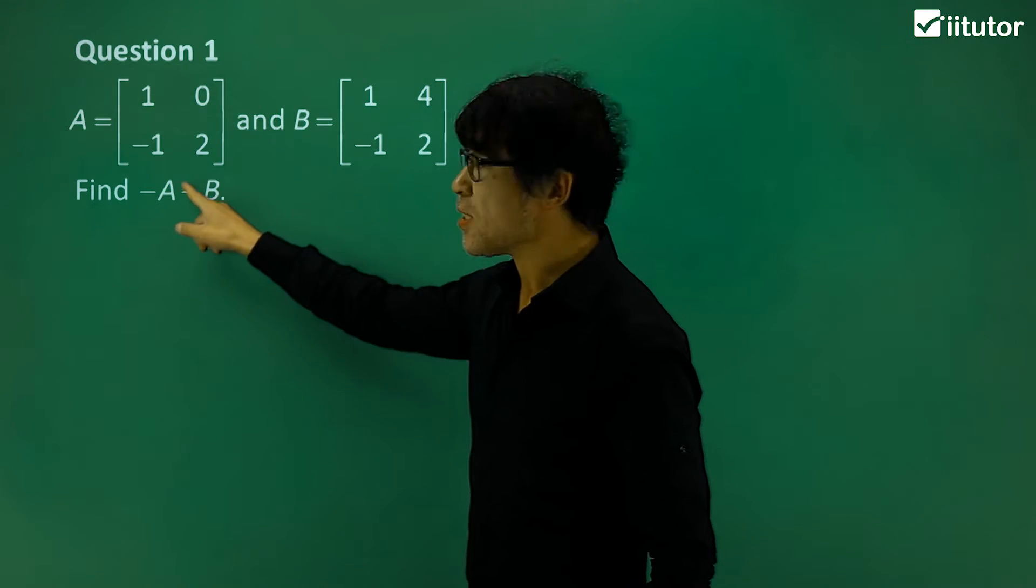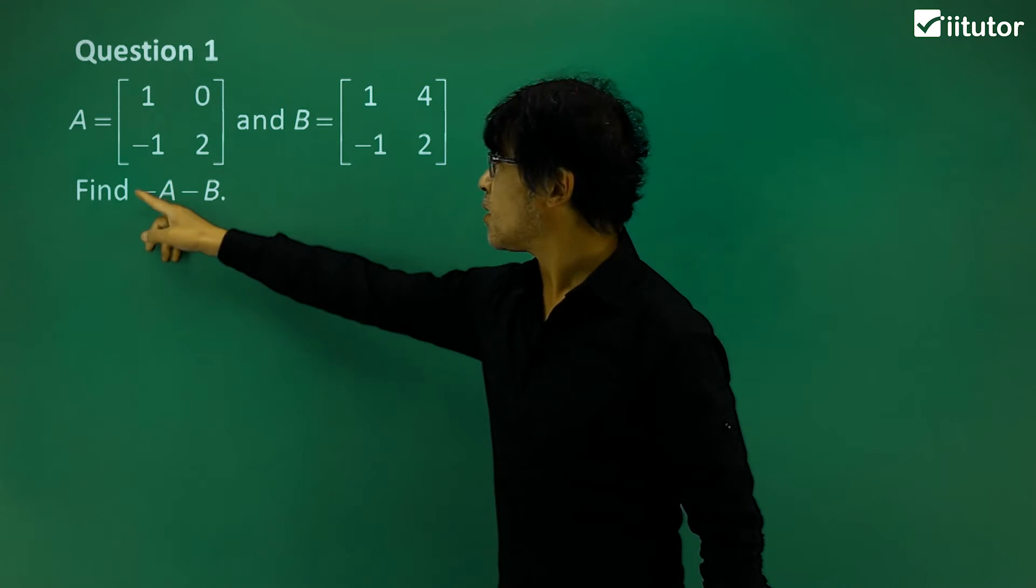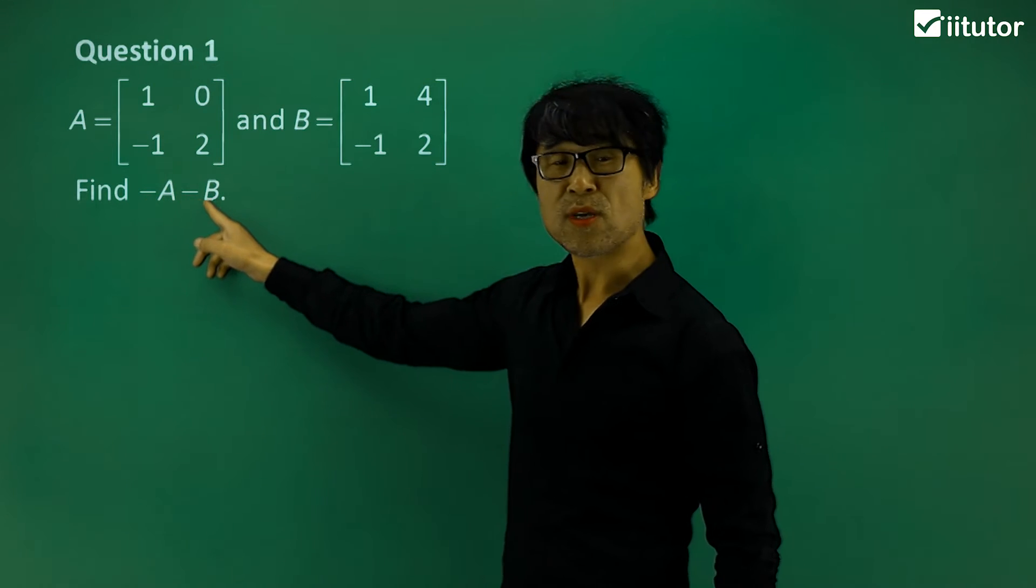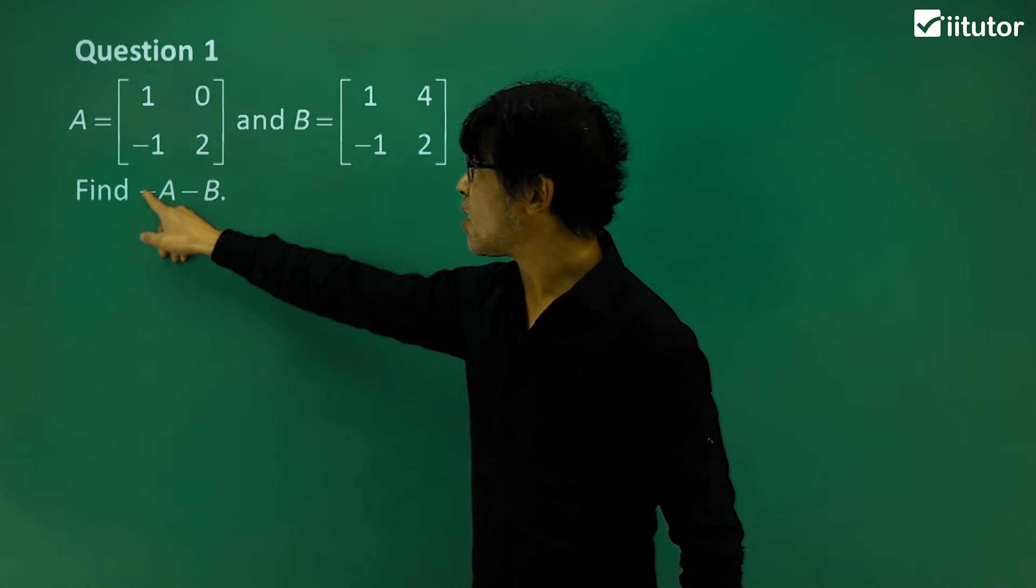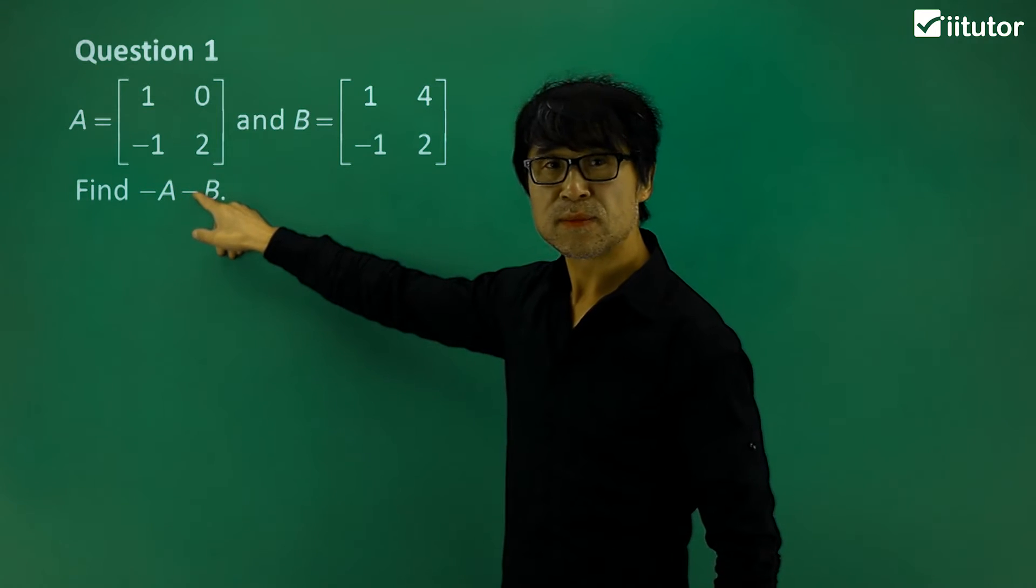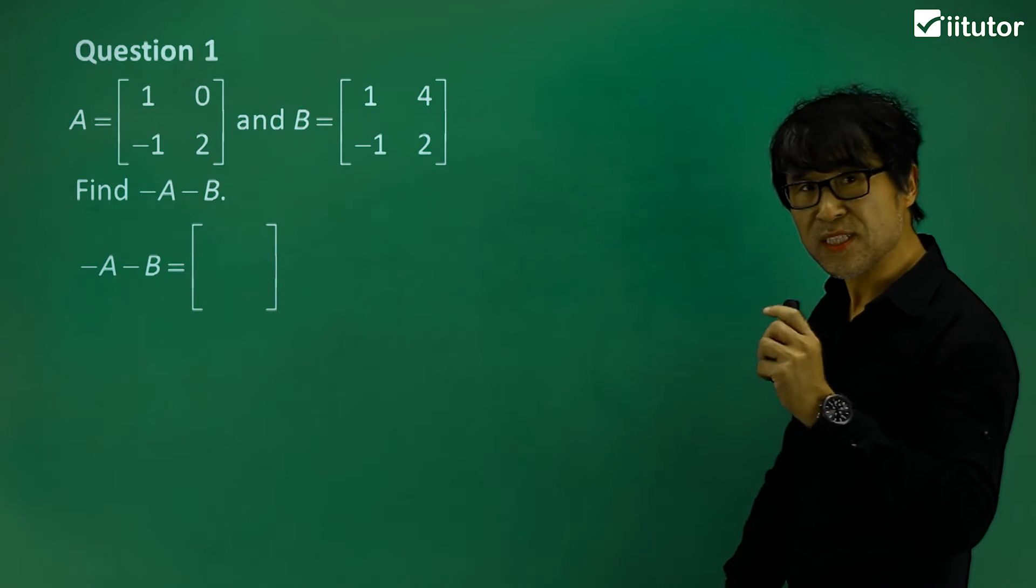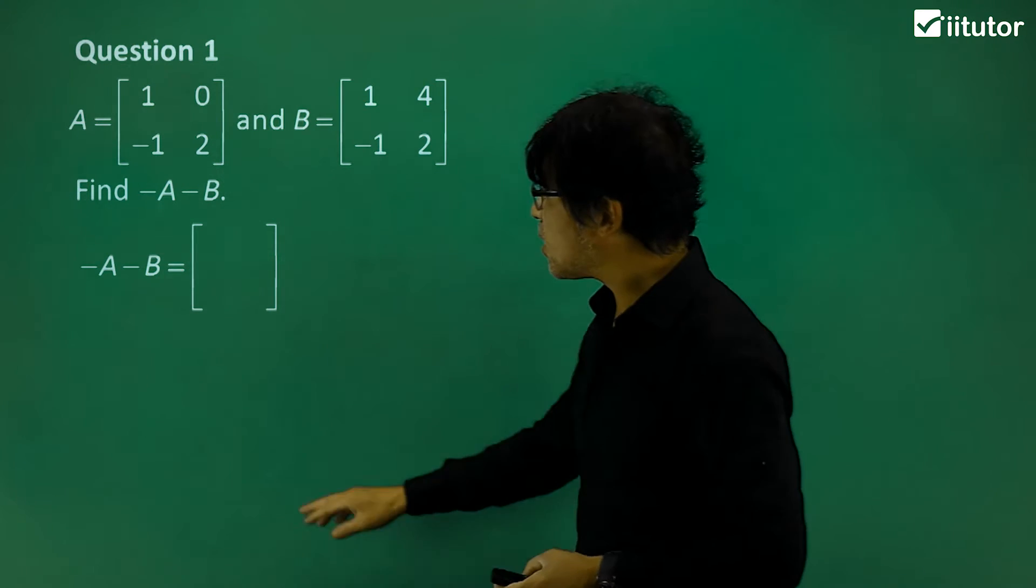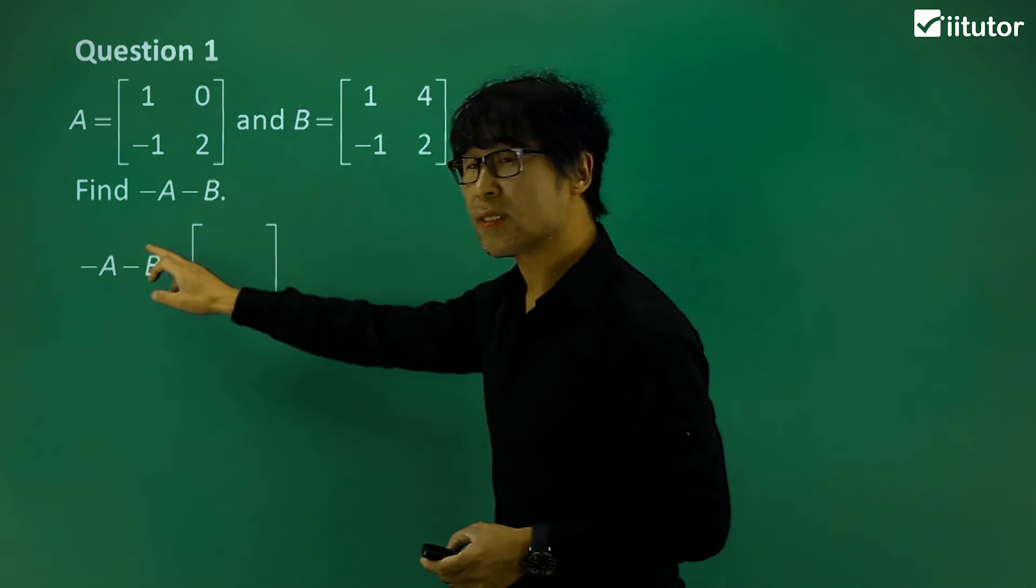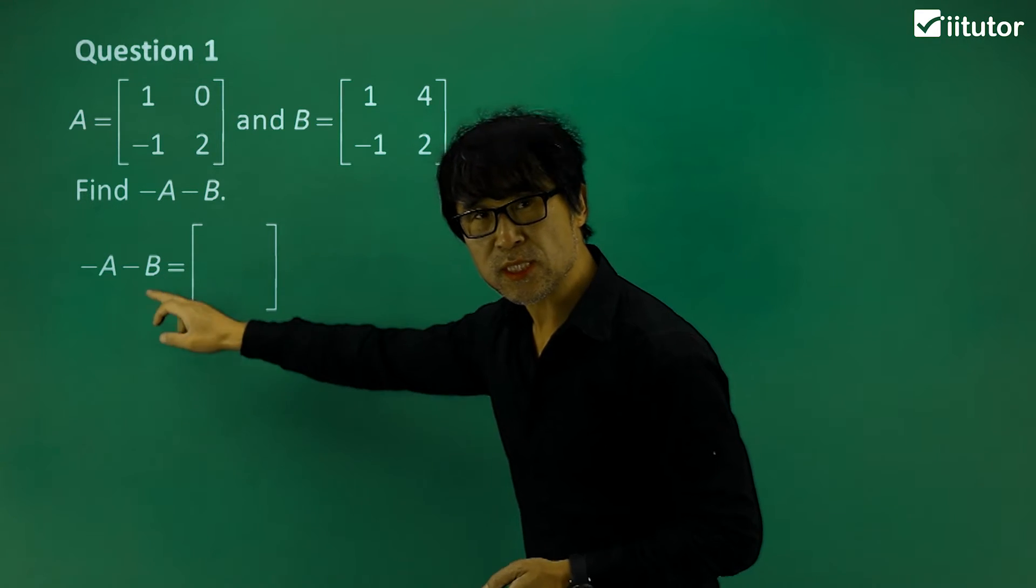Now, negative A, negative B, it's not negative A times negative B. It is negative A minus matrix B, so just be careful, it's not times between them. So negative A minus B matrix is here.